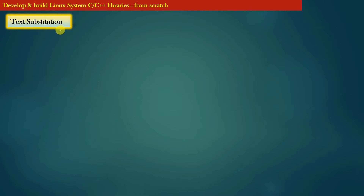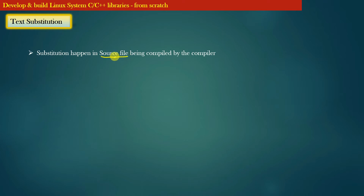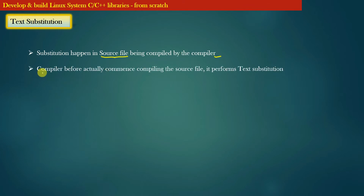Now we will discuss what exactly text substitution is and how it works. Text substitution happens in source files — files with the extension .c or .cpp are source files. The compiler, before actually commencing the compilation of the source file, performs text substitution. This point is very important.